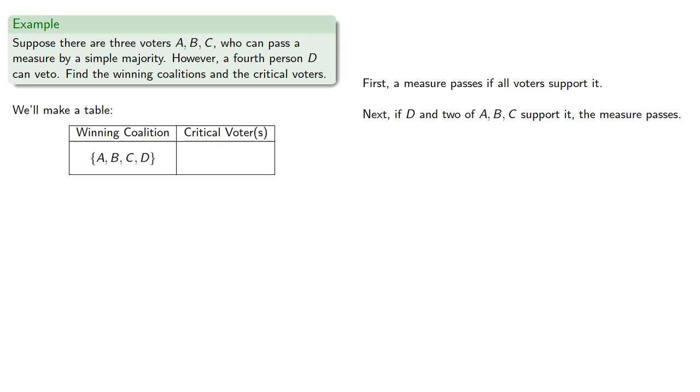Next, if D and two of A, B, and C support it, the measure passes. So those are the coalitions A, B, and D; A, C, and D; and B, C, and D.